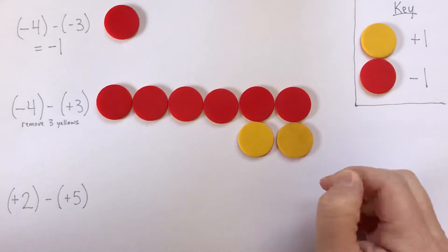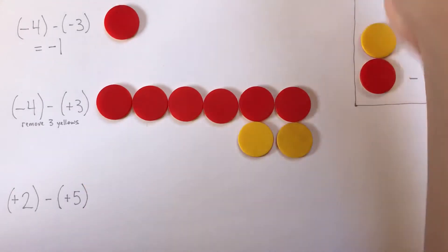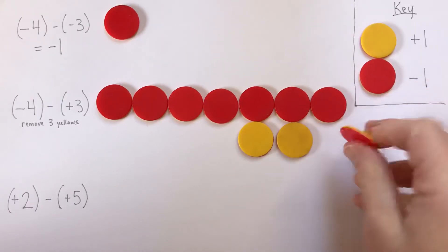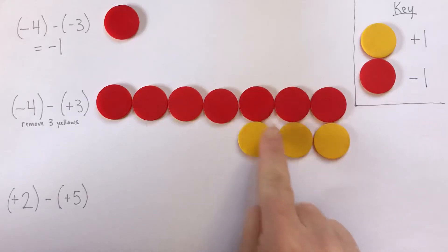It's really important to remember that it's still negative 4. Sometimes people think they go through all this and they think they've already done the subtraction. This here is still negative 4 because all of this is worth 0. That's negative 4.